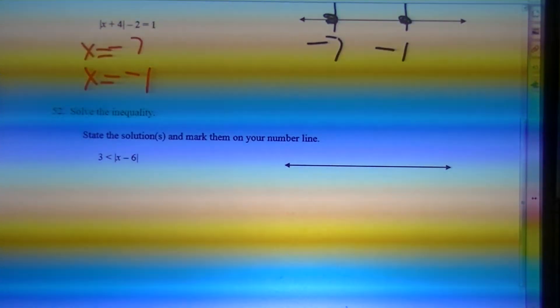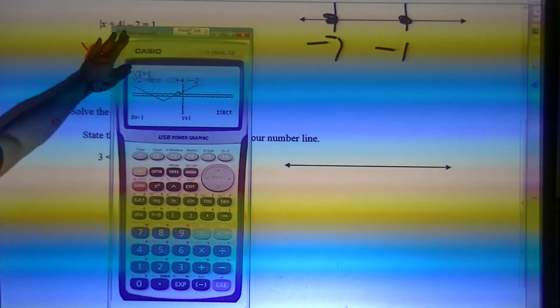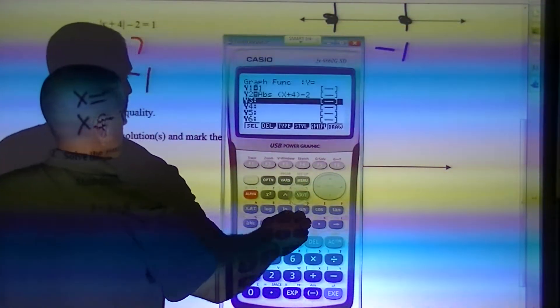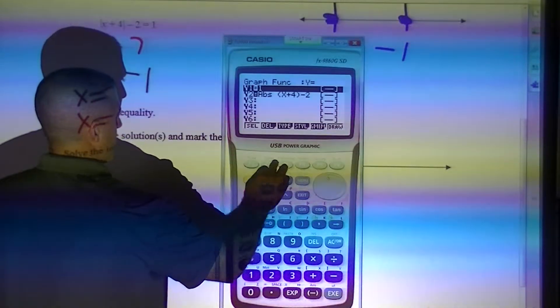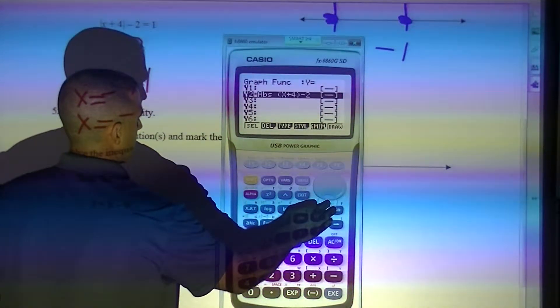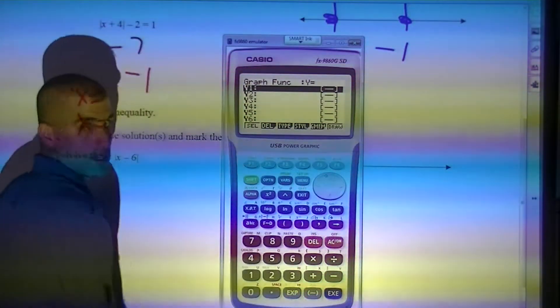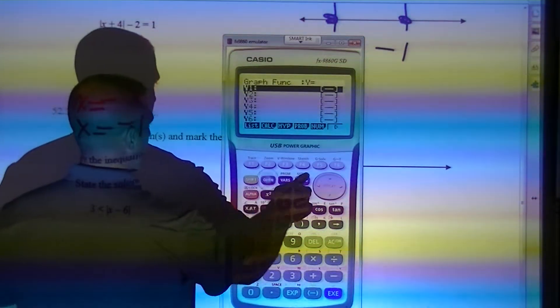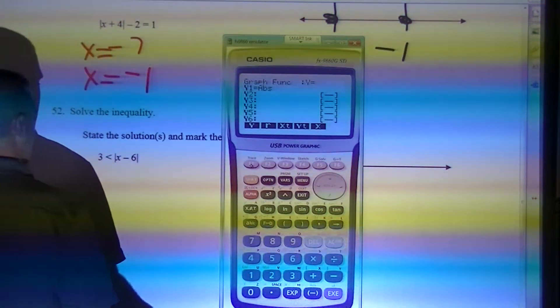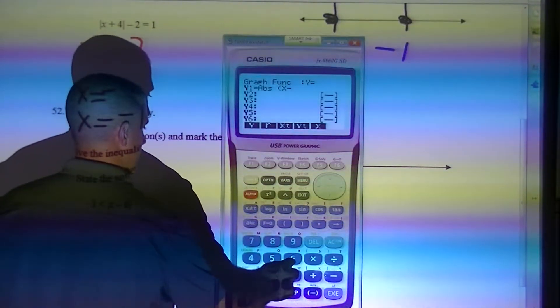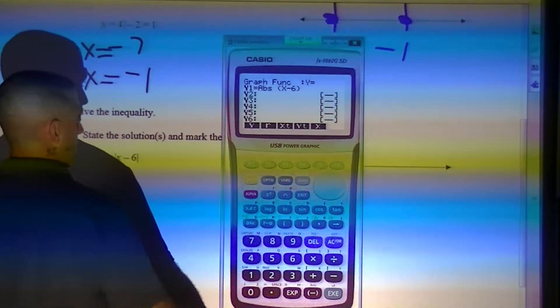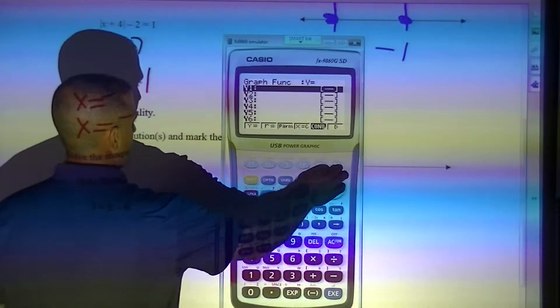And I think this is the last problem. It's an inequality. So as a review, I'm going to graph that right side first. So I'm going to do option, num, abs. x minus 6. Whoops. I forgot to pick my inequality. Tight. I'm going to pick that exact inequality, which is f2.